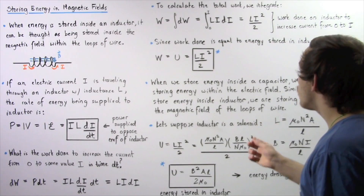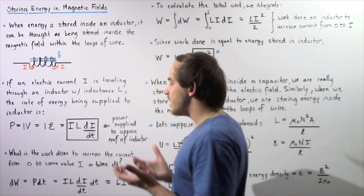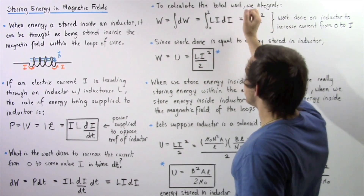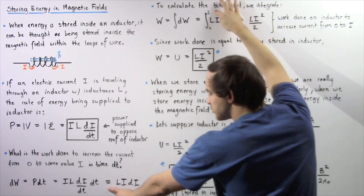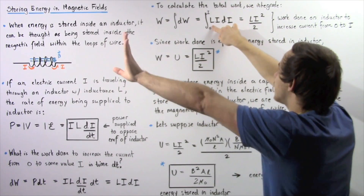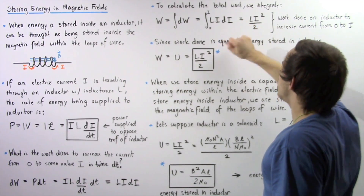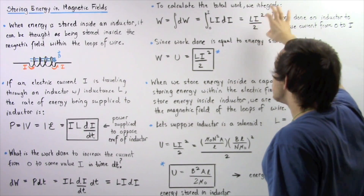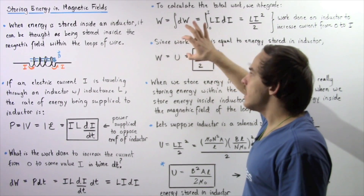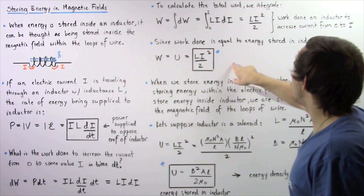To calculate the total work done, we integrate: work equals the integral of dW from zero to I, which is the integral of L·I·dI. Since L is constant, we take it outside the integral and evaluate to get W equals L·I² divided by 2. This gives us the quantity of work required to increase the current from zero to I. Since work done equals energy stored in our inductor, the potential energy is equal to ½LI².